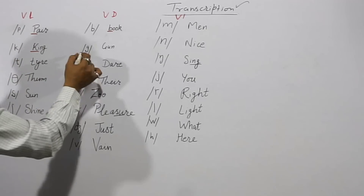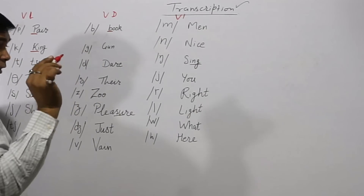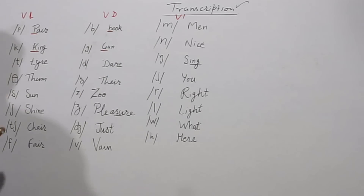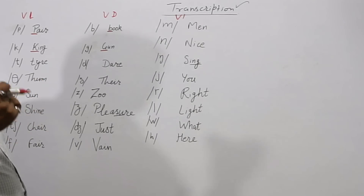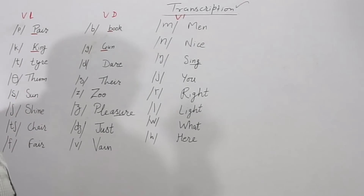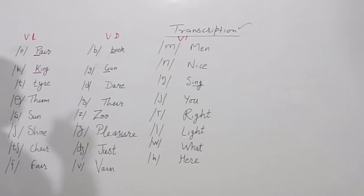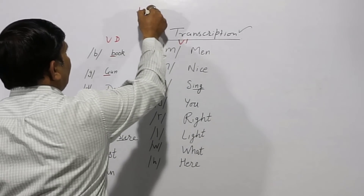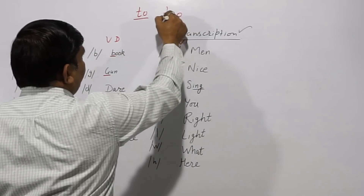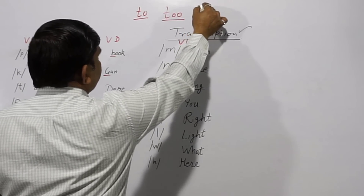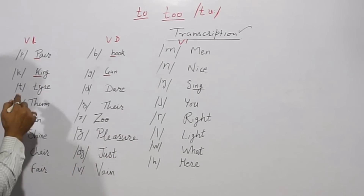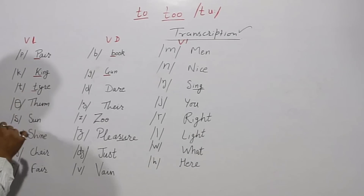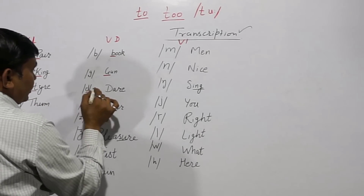Next sound is /k/ — just like small k — as in 'king'. Then /g/ — just like small g — as in 'gun'. Then /t/ — this /t/ is spoken with the tip of your tongue on the alveolar ridge. People may write it differently but both have the same pronunciation.